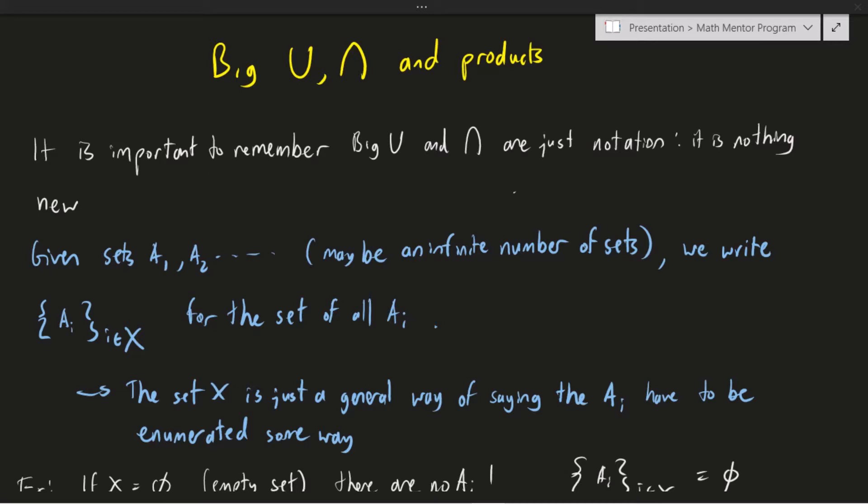So the easiest way to get into the big union and intersection notation is to first start talking about things called collections of sets. So we will pretend we have some sets, and let's call them A1, A2, and so on. The reason why I keep the dots running over here is because we may in some cases have an infinite number of sets. But in any case, we'll write this right here. So we'll use the set brackets, put Ai in it, and then write i in X, whatever that means. And all that will represent is the set of all the Ai, and we will call this a collection. It is a set, but we will call it a collection, just to distinguish it from the sets Ai. Now our set X, I should explain, is a general way of saying the Ai has to be enumerated. And what does that mean? Well that just means that we have to be able to count the Ai in some way.